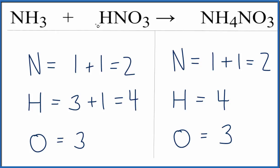When you do that, you'll see that NH3 plus HNO3 yields NH4NO3 is already balanced.